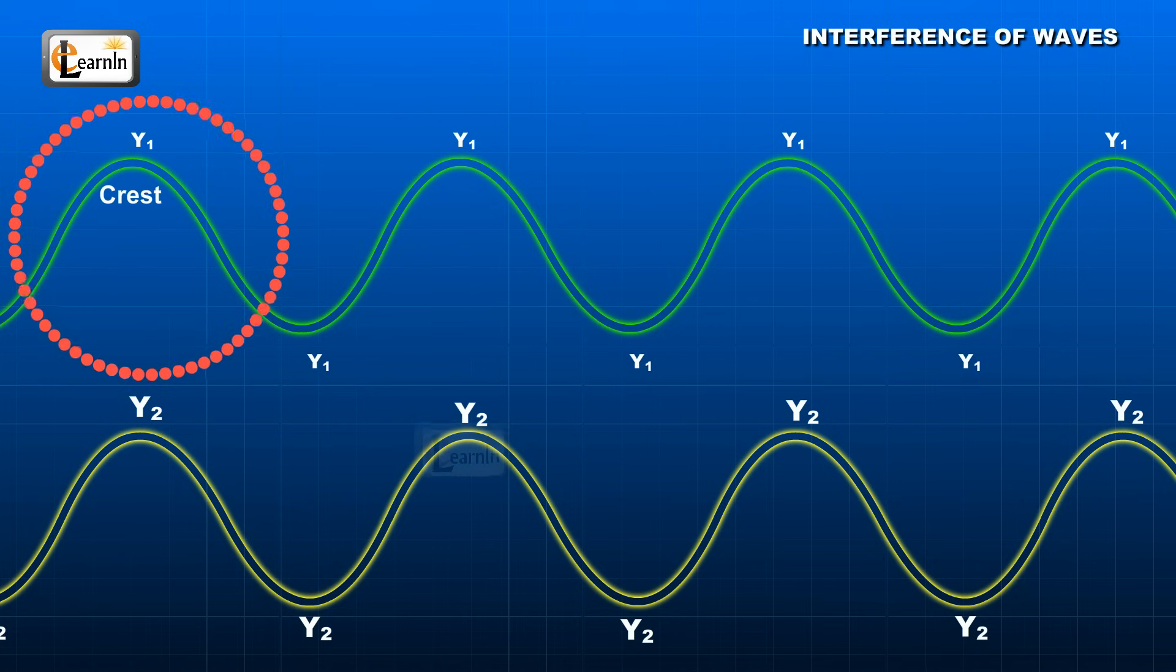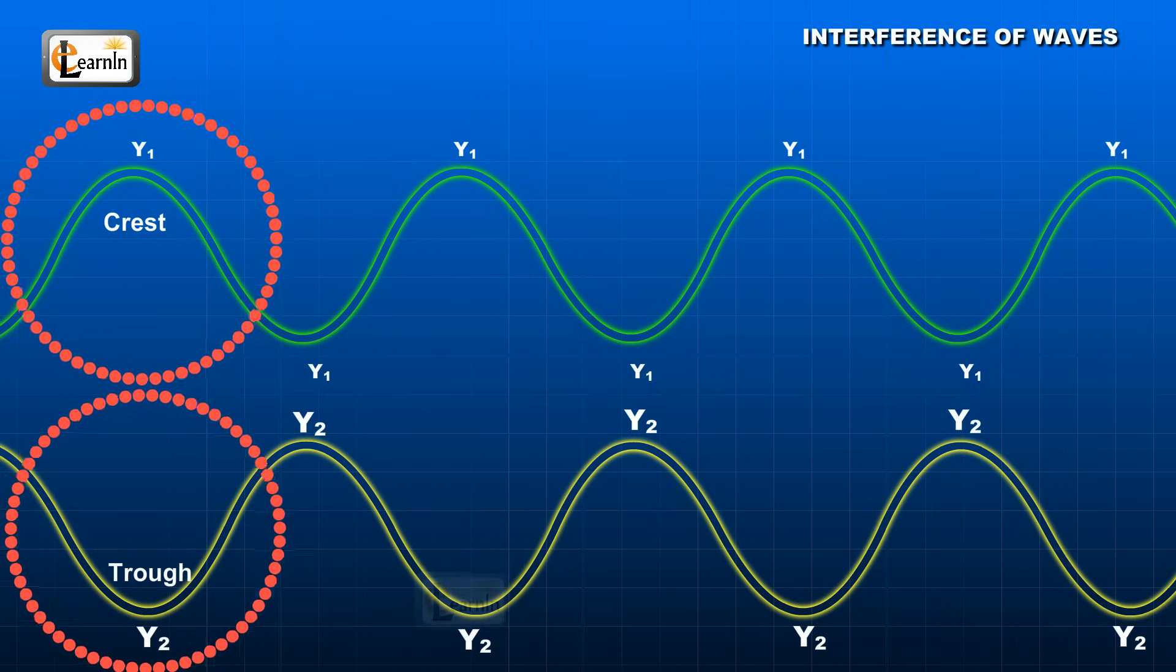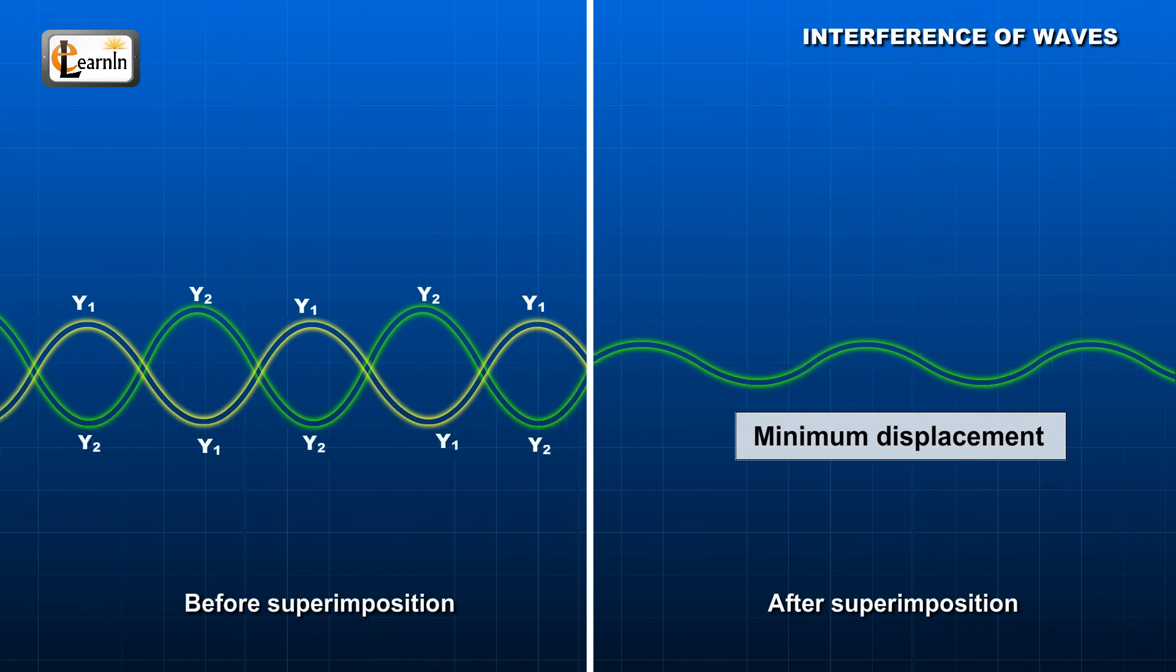When y1 is due to the crest or trough, and y2 is also due to a crest or trough, the resultant would be the maximum. And when y1 is due to a crest and y2 is due to a trough, or vice versa, the displacement would be minimum.